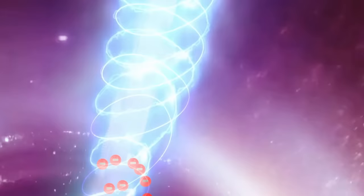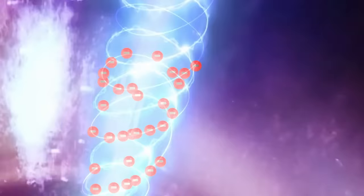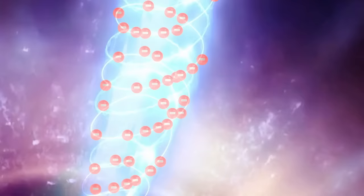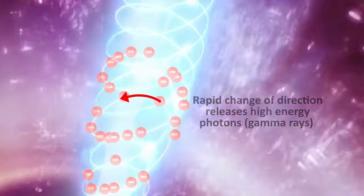The particles being ejected are largely electrons. The twisted magnetic field causes the electrons to travel in a kind of helix, like a DNA molecule. If the electrons are moving fast enough, the rapid change of direction can produce high energy photons, or gamma rays.